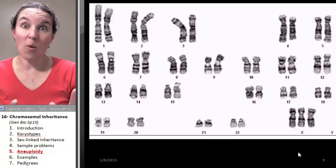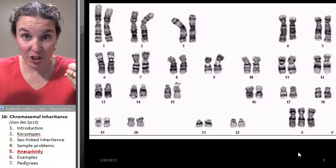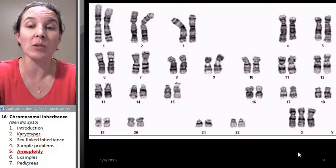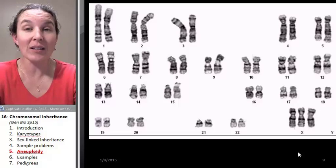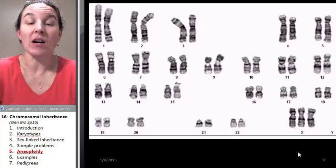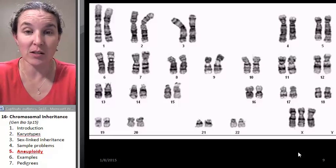So essentially, the whole point is that if we have an issue of nondisjunction where the chromosomes don't properly separate, we can end up with an abnormal number of chromosomes that will have phenotypic consequences or, most likely, have phenotypic consequences.